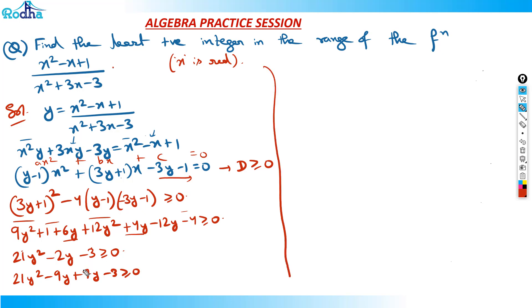Then we can further move on. If I take 3y common here, I will take (7y minus 3) plus 1 times (7y minus 3) is greater than equal to 0. And then (3y plus 1) times (7y minus 3) is greater than equal to 0. So we have got two roots here. So what are the roots? The roots are y equals minus 1 by 3 and 3 by 7.